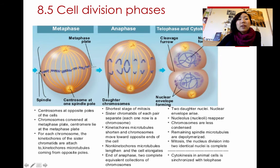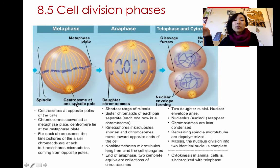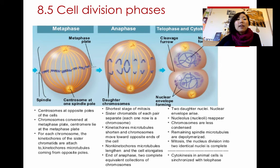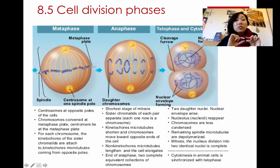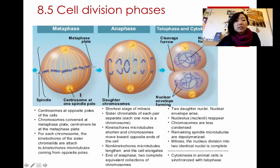The next phase is metaphase. This one's probably the easiest to recognize because all the chromosomes are aligned right in the middle of the cell. The centromeres between the two sister chromatids are getting attached to the mitotic spindle, and the cell is getting ready to divide.